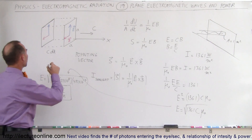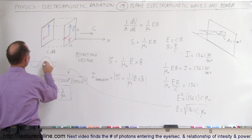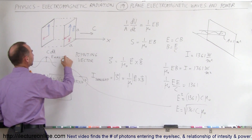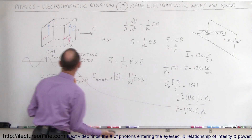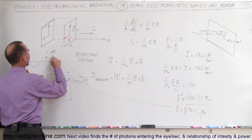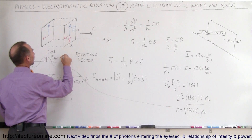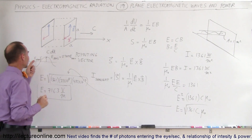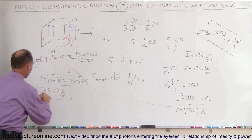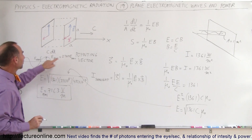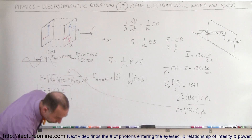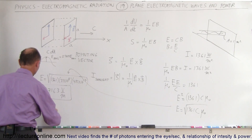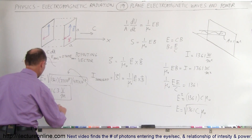If you want to know the peak oscillations, remember a wave oscillates and the RMS value is 0.707 times the peak value. So E_RMS equals 0.707 times E_max. This 716.3 V/m is the RMS value, so to find the maximum value we divide by 0.707. Dividing 716.3 by 0.707 gives E_max in sunlight equal to 1,013 volts per meter.